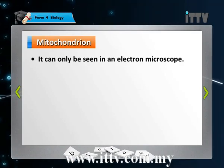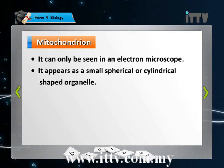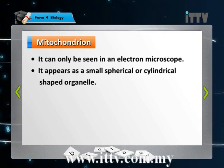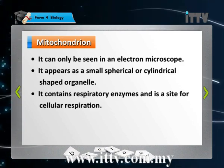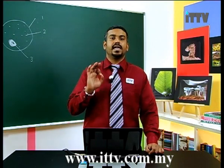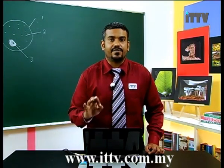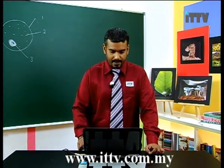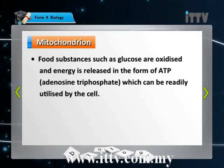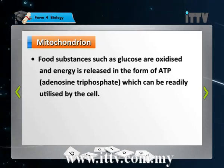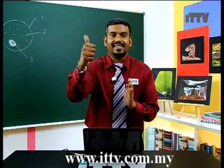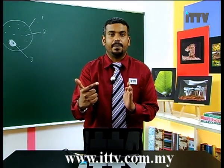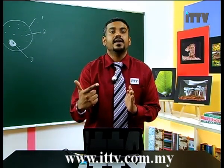The mitochondria can only be seen under an electron microscope. They are small, spherical, and cylindrical shaped organelles that contain respiratory enzymes and are a site for cellular respiration. The key point: mitochondria is a site for cellular respiration. Food substances such as glucose are oxidized and energy is released in the form of ATP, which can be readily utilized by the cell. Function of mitochondria: carries out cellular respiration and produces energy in the form of ATP.